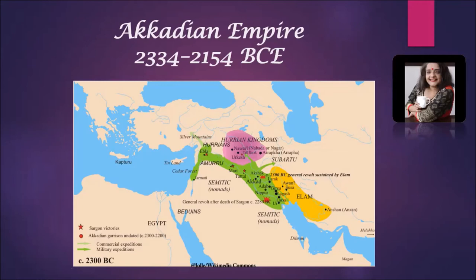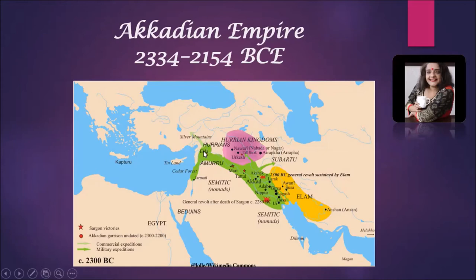This empire existed roughly from 2334 BCE to 2154 BCE. Sargon was originally a cup bearer to another king, through which he gained experience organizing forces. He displaced this king, became king of the Akkad region, and then led expeditions into Ur, Nippur, Ebla in the northwest, and also Canaan. He captured all this region and unified it into the Akkadian empire, one of the earliest empires in the history of human civilization.